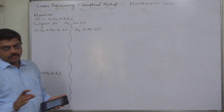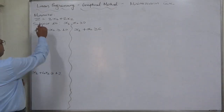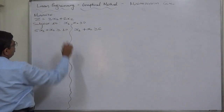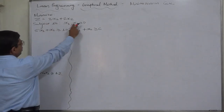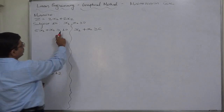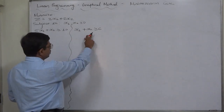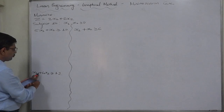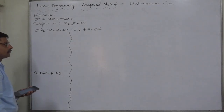The case is: minimize Z equals 3x1 plus 2x2, subject to x1 and x2 both non-negative; first constraint: 5x1 plus x2 greater than or equal to 10; second: x1 plus x2 greater than or equal to 6; and third: x1 plus 4x2 greater than or equal to 12.